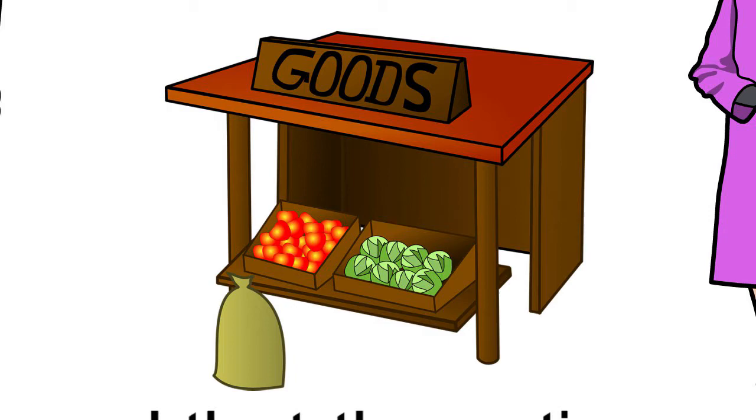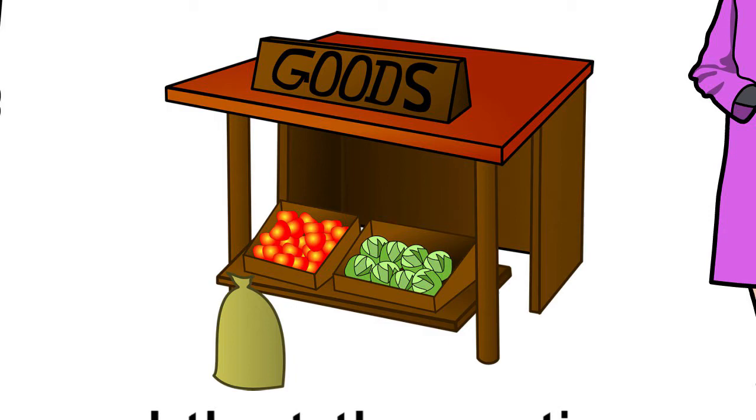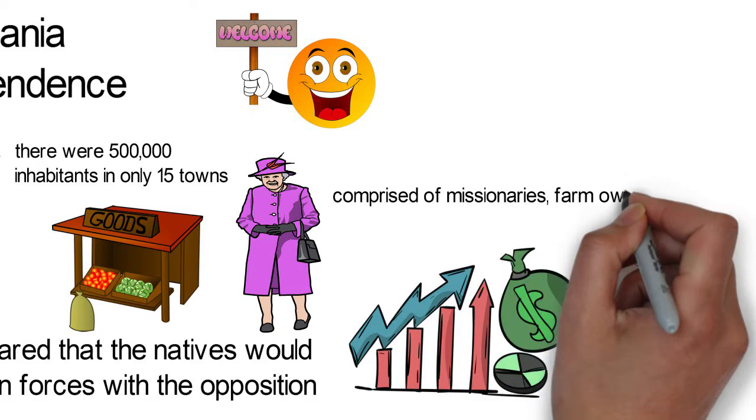The Asians and Arabs were the middle class and were wholesale and retail traders. Meanwhile, the white population comprised of missionaries, farm owners, government workers, among other professionals.